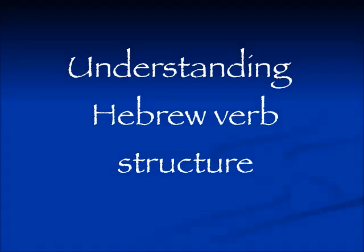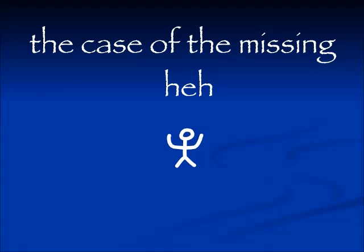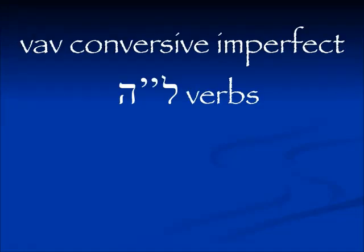Shalom. Today we're going to have another lesson about Hebrew verb structure. We're going to call this the case of the missing hey. I covered this in a previous video very briefly with one slide, but today we're going to go into depth on it. This is a very specific case of vav conversive imperfect lamed hey verb. The lamed hey verbs are verbs whose last letter is hey, and they have some differences in the past tense where the hey would turn into a yud, and also some very specific differences when they're in the vav conversive imperfect.